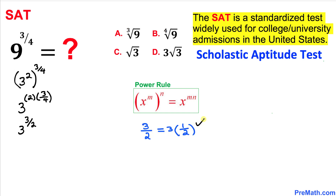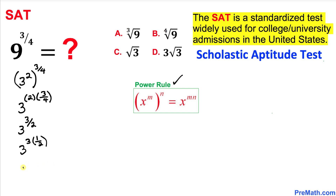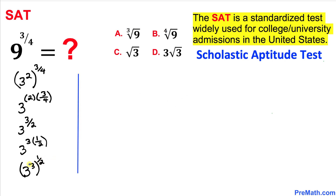Now the exponent 3 divided by 2 can be written as 3 times 1 over 2, so we have 3 power 3 times 1 over 2. Applying the power rule once again, this can be written as nested exponents: 3 power 3, whole power 1 divided by 2.